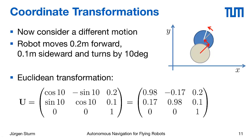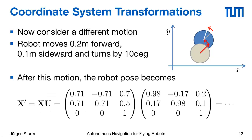This applies not just to points in front of the robot but also to motions, that is, to transformations. For example, imagine the robot moves forward 20 cm, 10 cm to the left, and also turns by 10 degrees. This motion can again be described by a Euclidean transformation. To compute the final robot pose after executing this motion, we concatenate the previous robot pose X times the motion U, obtaining a new Euclidean transformation representing the pose after the motion.